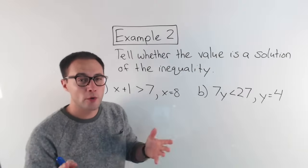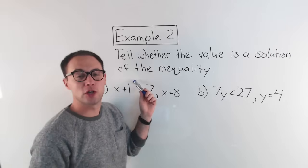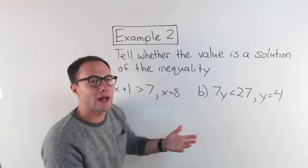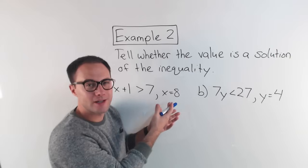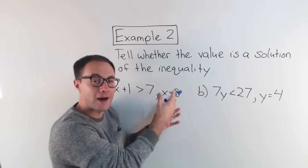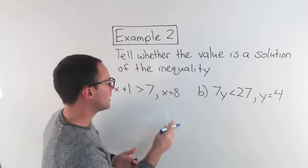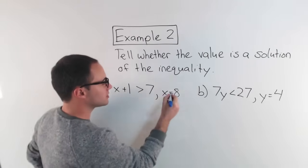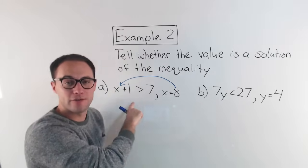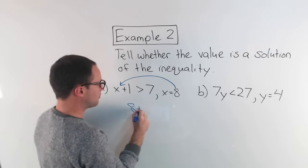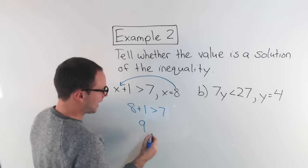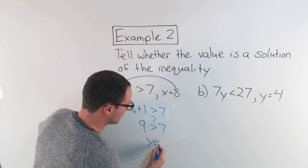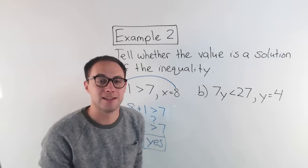Here we go with example 2: tell whether the value is a solution of the inequality. A solution means it makes the inequality true. To tell if a value is a solution, all we do is substitute. So X plus 1 is greater than 7, and we're testing whether X equals 8. Substituting: 8 plus 1 is greater than 7. That gives us 9 is greater than 7 — yes, that's true. So X equals 8 is a solution to that inequality.